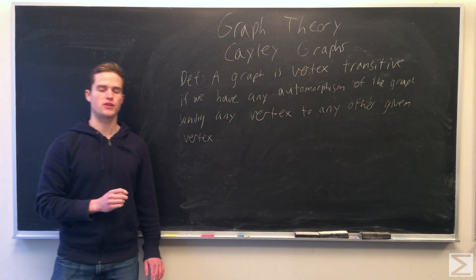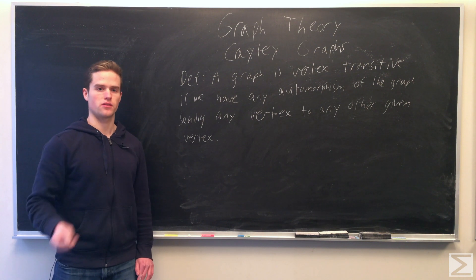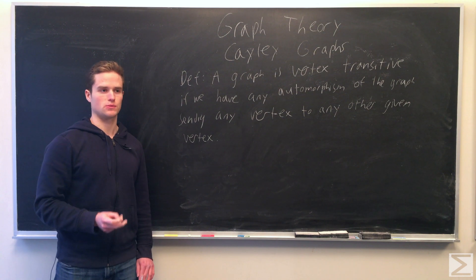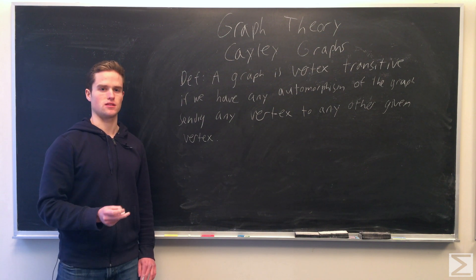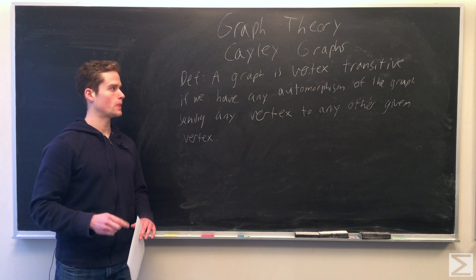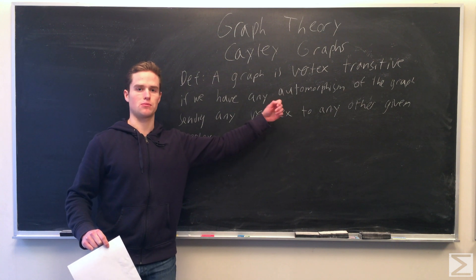We're going to say a graph is vertex transitive if we have an automorphism of the graph sending any vertex to any other given vertex. This is different than a homomorphism of the group. Here we're just preserving the edge relations, the incidence relations between the vertices. It's a bijective function from the graph to itself that preserves the incidence.